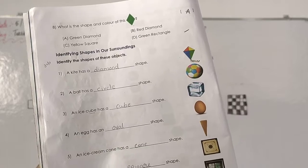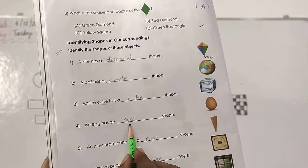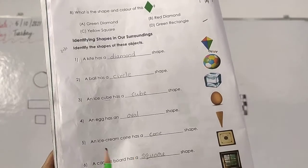Then next step. And egg has a dash shape. Egg. Oval shape. Yes. Write down O-V-A-L. Oval.